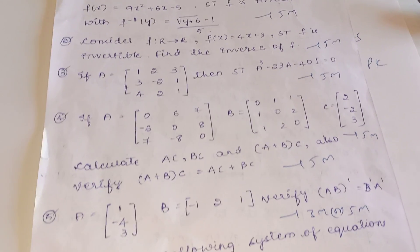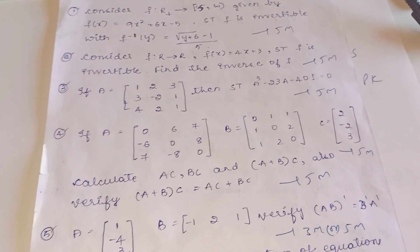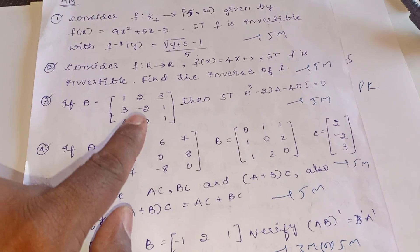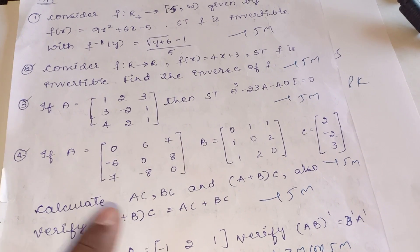Come back to matrices. Matrices we have four questions. Out of these four, any two they can give. One is for five marks, maybe one for three marks. In the five mark question they will give: show that A² - 23A - 40I = 0.